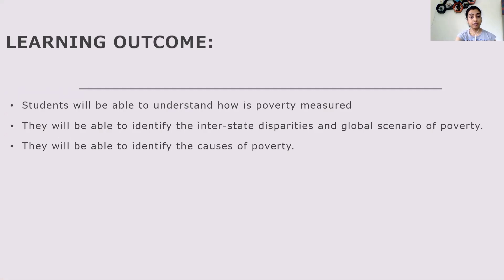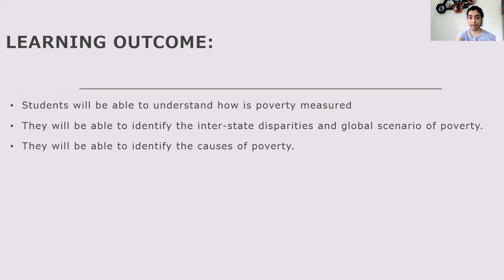From today's class, your learning outcomes will be: you will understand the concept of poverty line and how we measure it. You will be able to identify the level of poverty in different states of the country, and also the global scenario of poverty all over the world. And lastly, you will be able to identify the causes of poverty — what are the various factors that cause poverty.